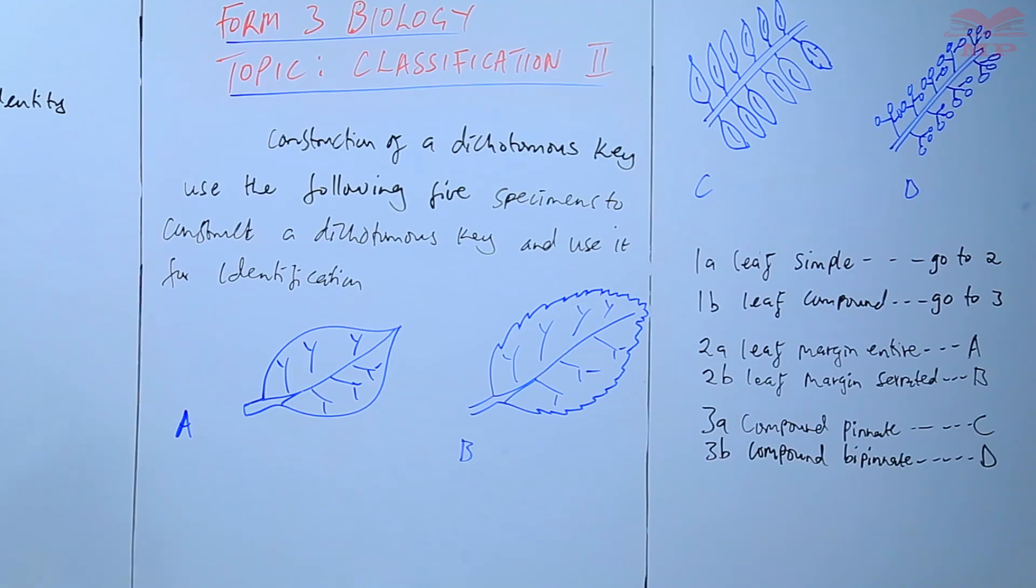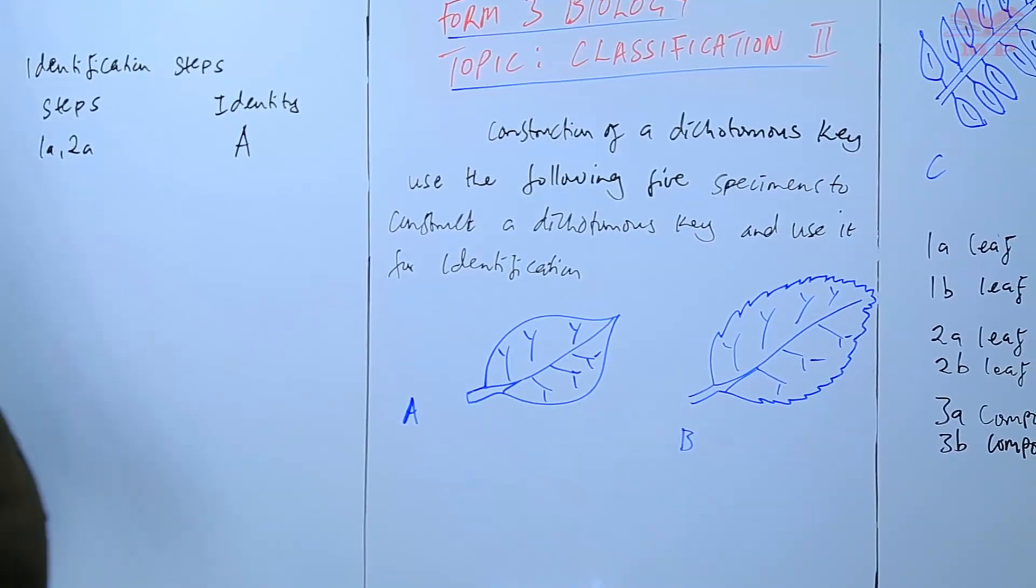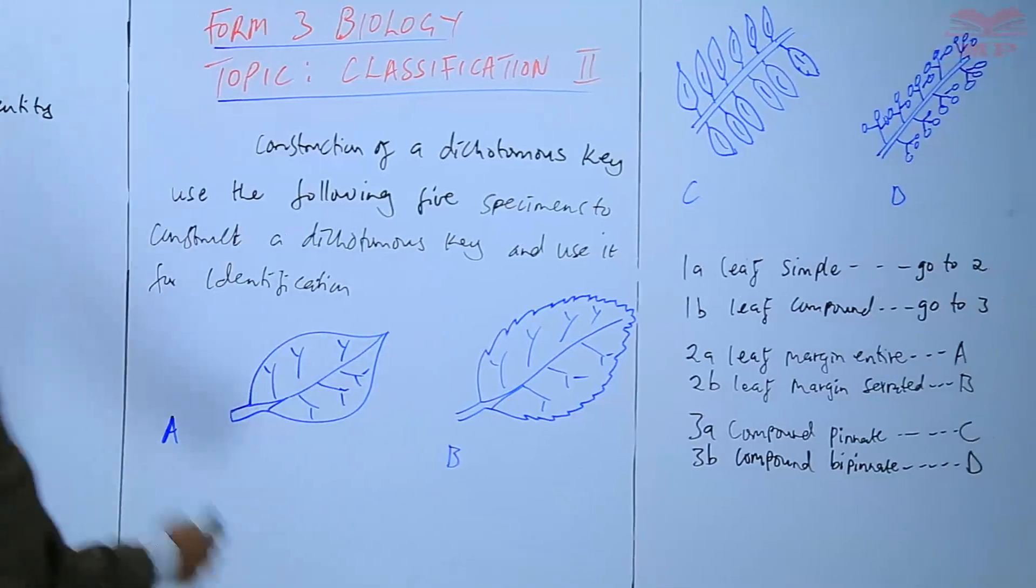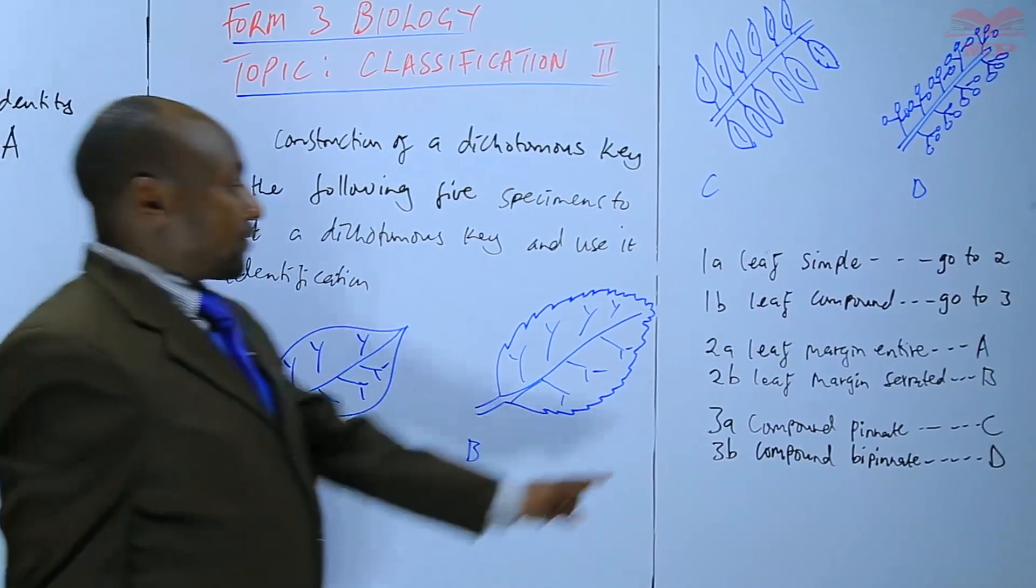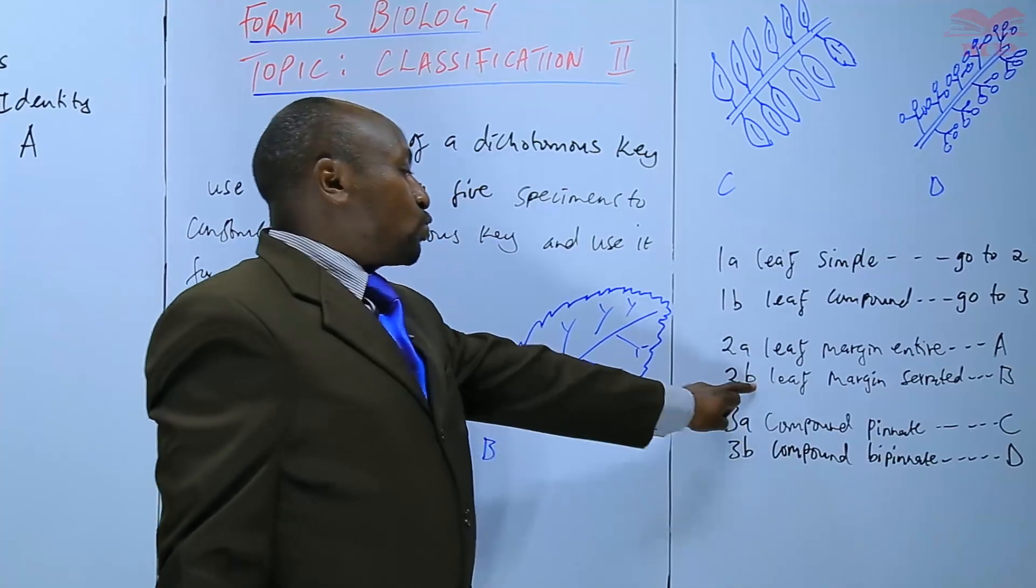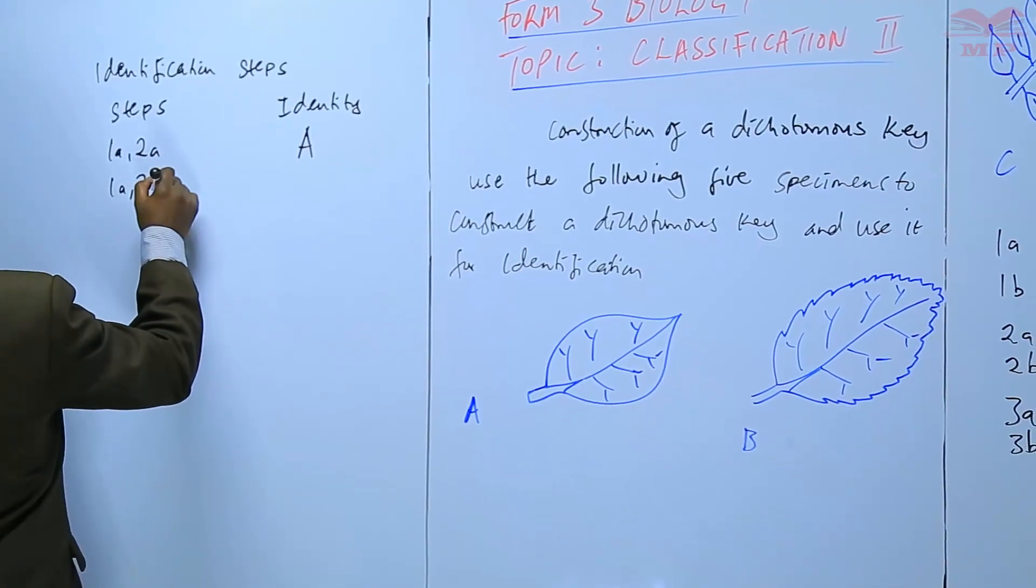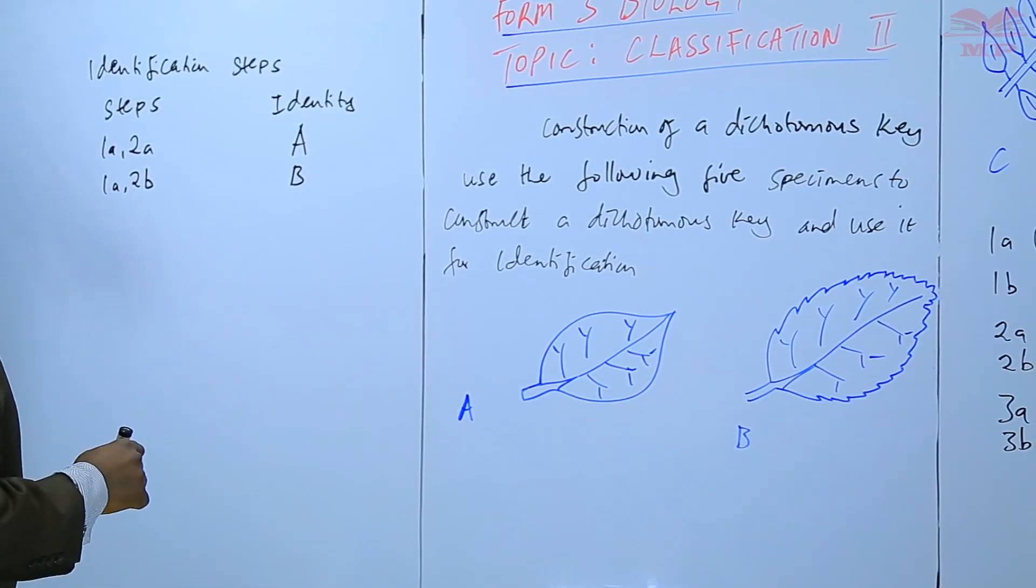Then we identify B, we are starting with 1A as well, then go to 2, B is telling us we go to 2B. 2B, we are following the steps, we have identity as B.